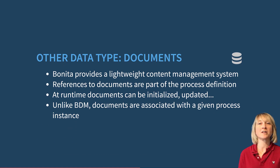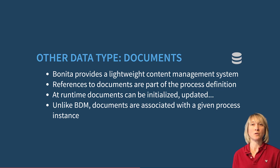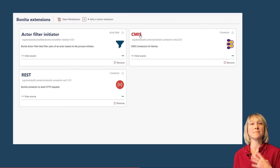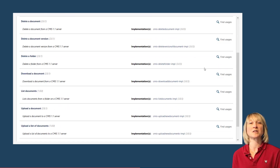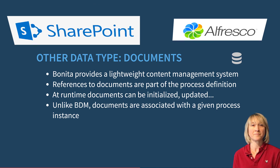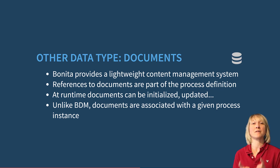The second data type is documents. A document is a structured set of independent information attached to a process instance. It is created and updated by a tool that is not part of the process, though references to documents are part of the process definition. Bonita provides a basic document management system supporting file versions, but you can also use content management systems such as SharePoint or Alfresco, integrated with Bonita through connectors. At runtime, documents can be initialized and updated like any other data, but unlike BDM data, documents are associated with a given process instance.